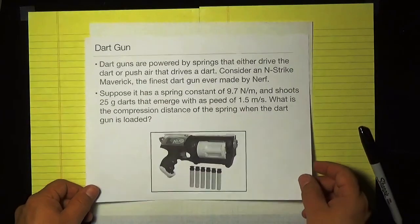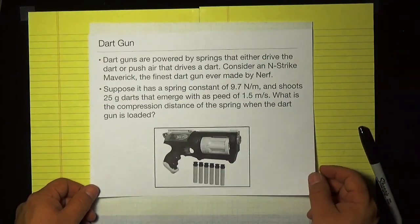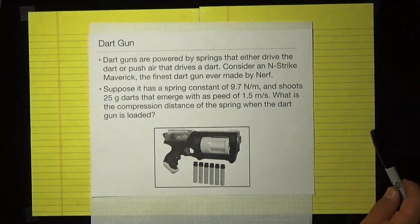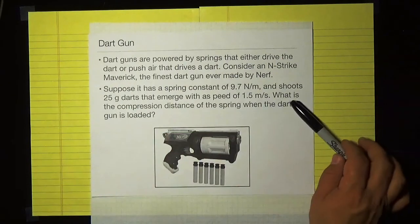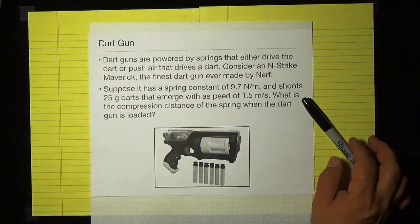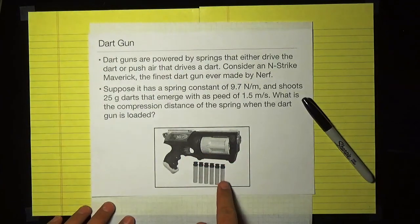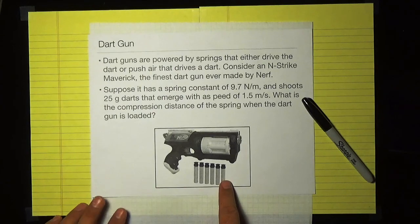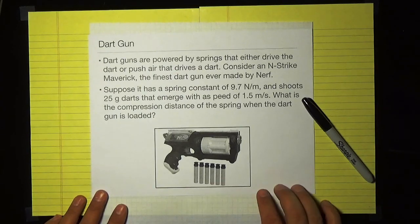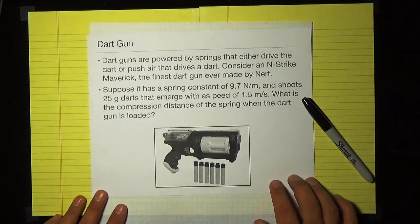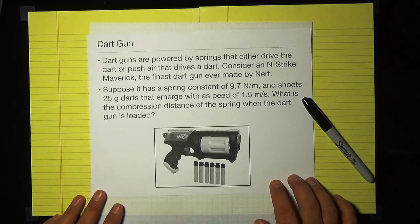So let's think about a common everyday toy, in this case a Nerf dart gun. Now dart guns are powered by springs and the springs either push directly on the dart itself or they push on the plunger that generates air that sends out the darts. And this is certainly the way that these Nerf dart guns work. So this is the N-Strike Maverick, that's probably the finest dart gun ever made by Nerf.